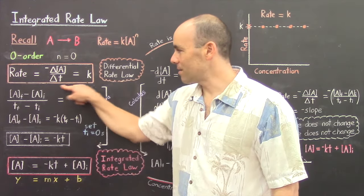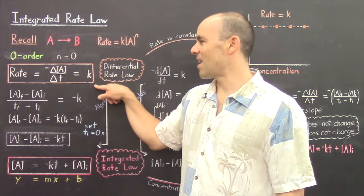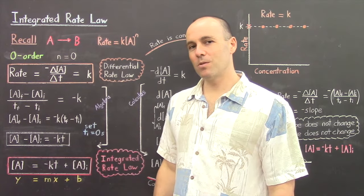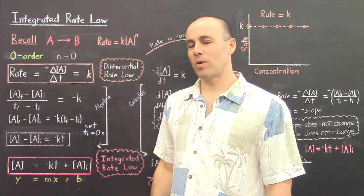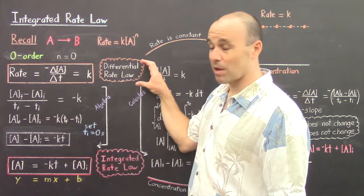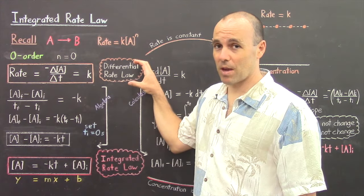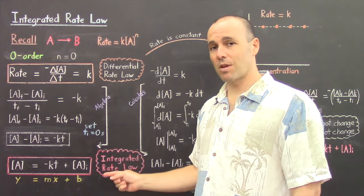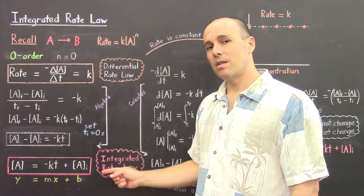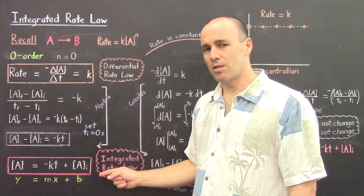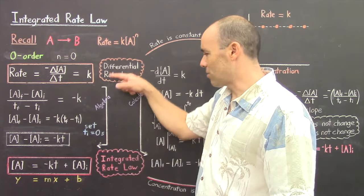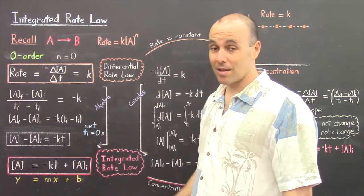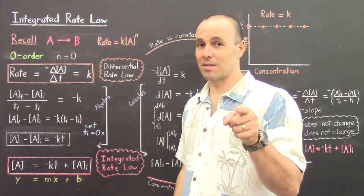So our rate is constant for a zero-order reaction. What we'll do at this point is take our differential rate law for a zero-order reaction and derive the corresponding integrated rate law. And we'll do this using two different methods: an algebraic derivation and also a calculus derivation for you students of calculus.